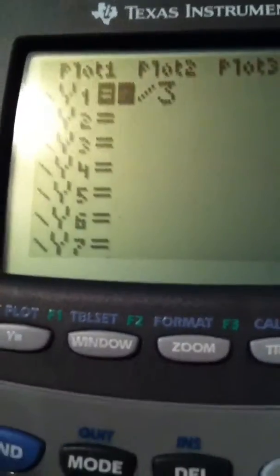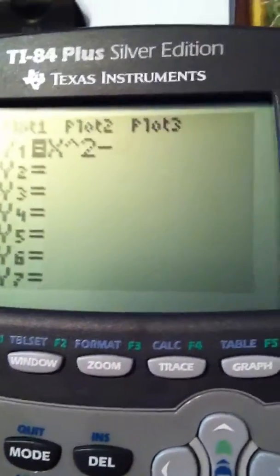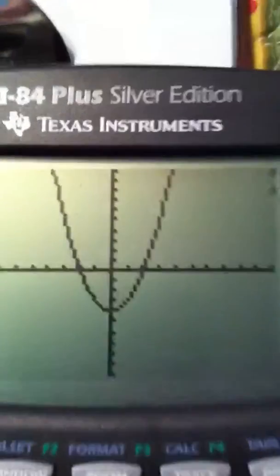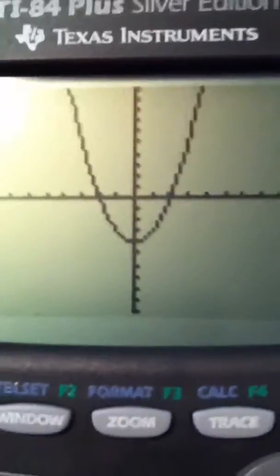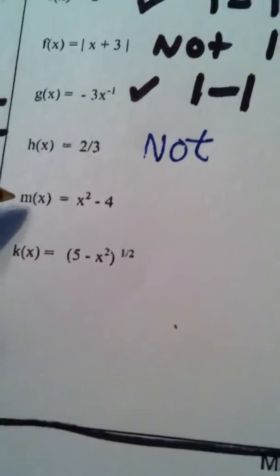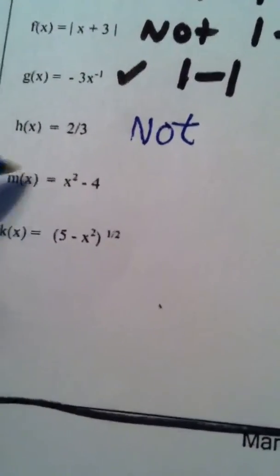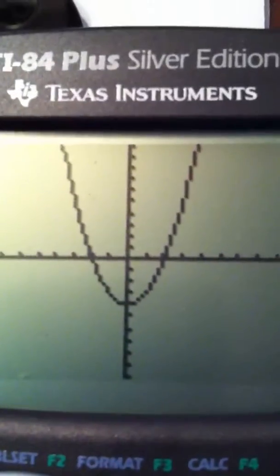Well, we know what that looks like already, but just for fun we'll graph it. Let me clear out what we have in there. x squared minus 4, and hit graph. And of course we get a parabola. Now yes, that's a function because it passes the vertical line test, but we already knew it was a function. They used the notation m of x. It was a function. Is it a one-to-one function?